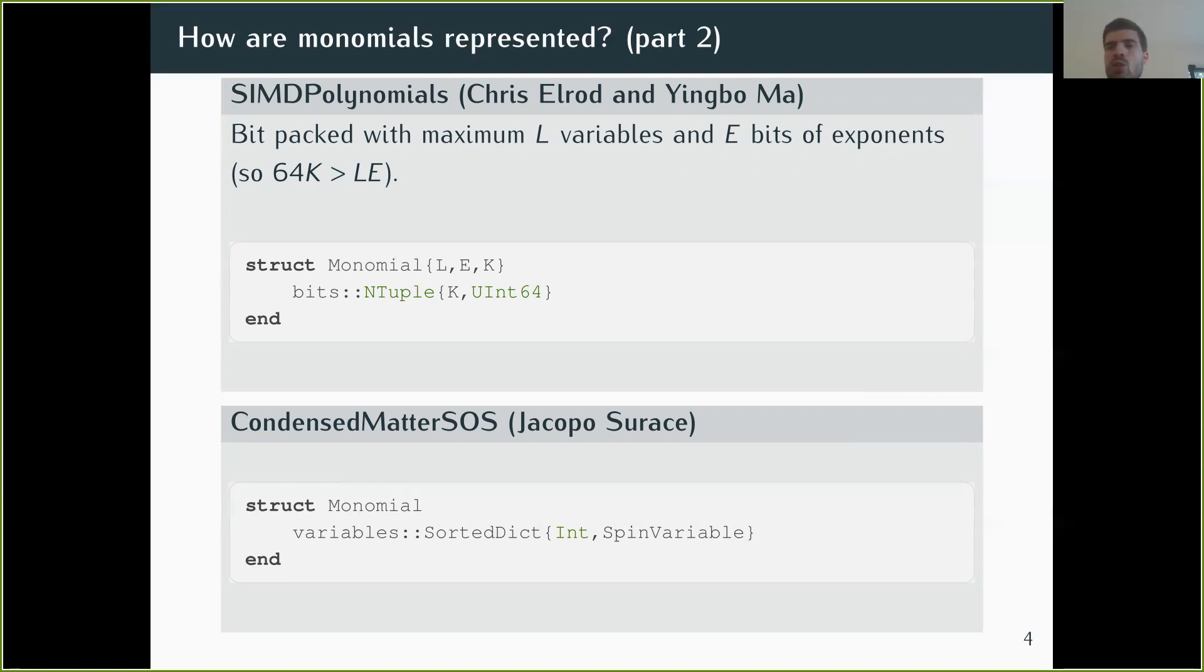And so you have a list of variables and all the variables will have - so a monomial is a product of variables and all the variables are from different sites. So you can represent the monomial as a sorted dict with the site and the variable at that site. In this application, the simplest way to represent all these identities was to create a new type of monomial.